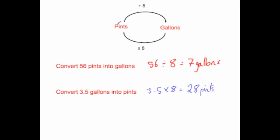So that's how you do it. To convert from pints to gallons you divide by 8. To go from gallons to pints you multiply by 8.